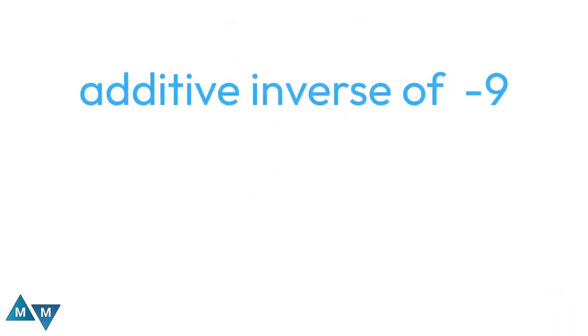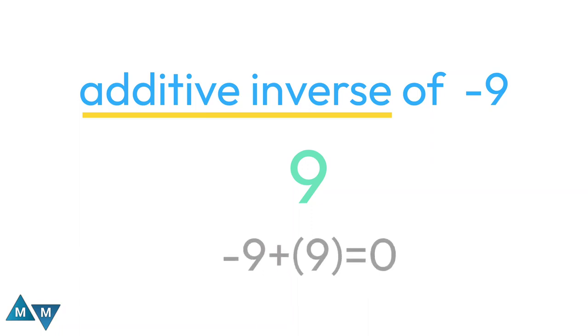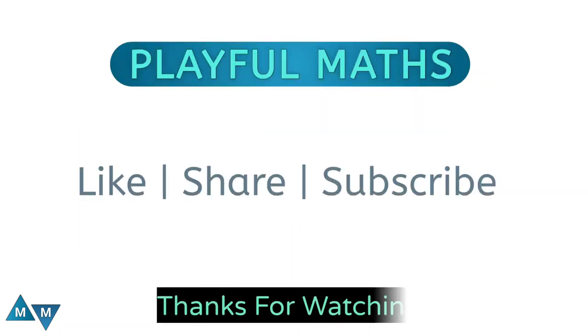Now the question becomes quite simpler: we have to find the additive inverse of minus 9. An additive inverse of a number is defined as the value which, on adding with the original number, results in 0. So the additive inverse of minus 9 equals 9. This is our final answer. Hope you understand it well. Thanks for watching!